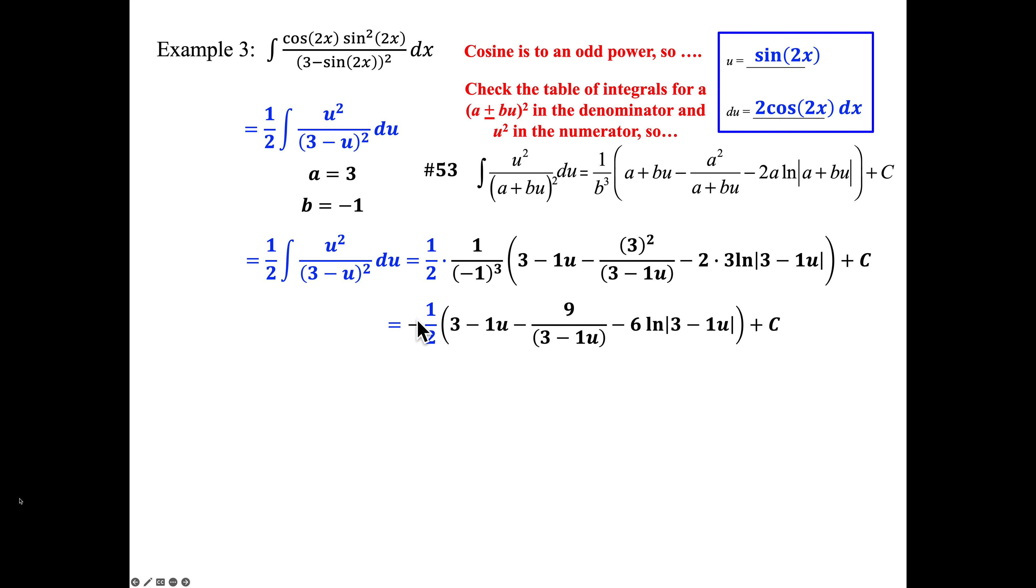Then we'll distribute the negative one half in, that gives negative three halves, plus one half, and then let's put in sine of 2X for U. Negative one half times this minus fraction gives a plus. We'll have 9 over 2 times 3 minus sine of 2X, but then we'll distribute the 2 so that 3 becomes 6, minus 2 sine of 2X. Negative one half times the negative 6 makes it plus 3, natural log of 3 minus sine of 2X in absolute value bars, plus C.